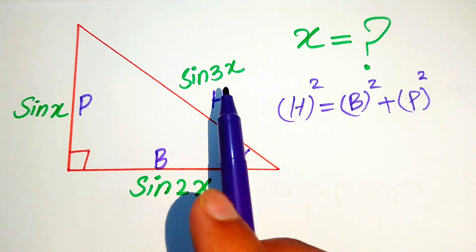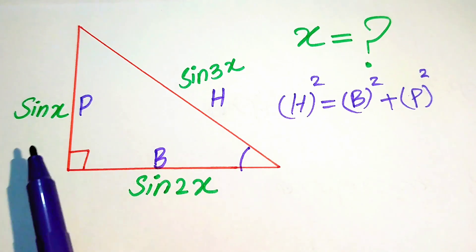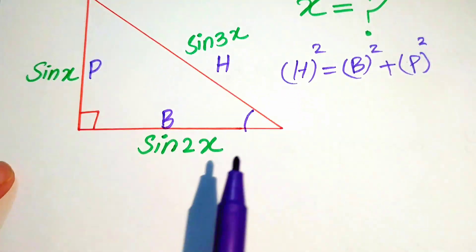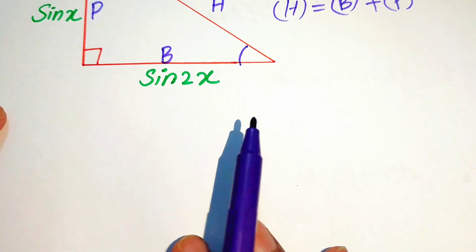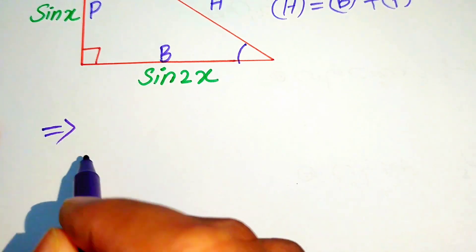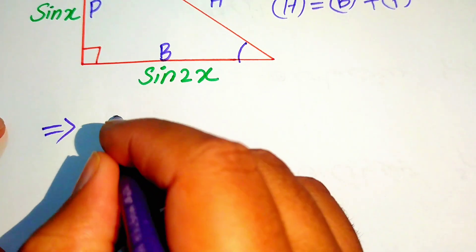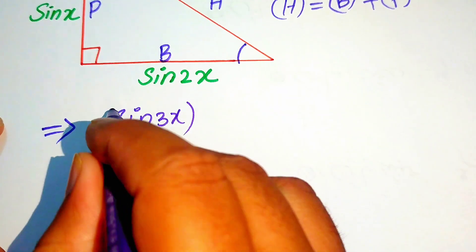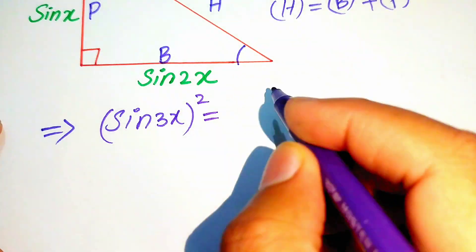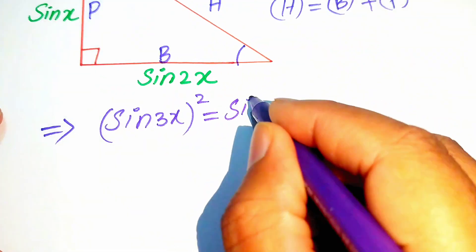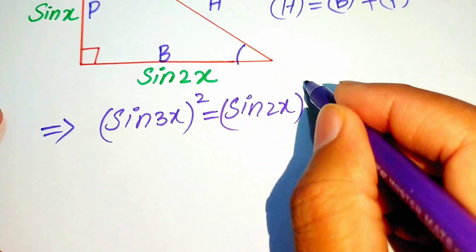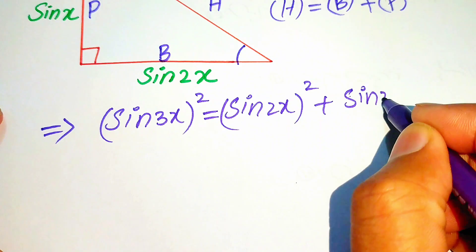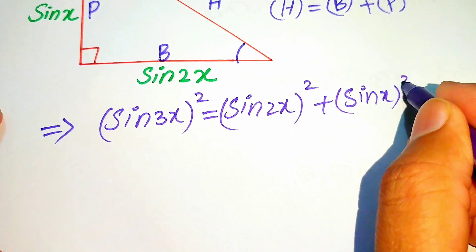In this diagram our hypotenuse is sin 3x, the base is sin 2x, and the perpendicular is sin x. Substituting these values into the Pythagorean theorem we obtain: sin²(3x) = sin²(2x) + sin²(x).